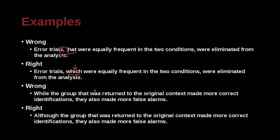'While the group that was returned to the original context made more correct identifications, they also made more false alarms.' versus 'Although the group that was returned to the original context made more correct identifications, they also made more false alarms.' The word 'while' is unclear because 'while' is about time. What we mean here is it looks like A, but actually it's B — a better word for that is 'although.' Because 'while' often implies time, it confuses the reader, so you try to avoid words that cause confusion.